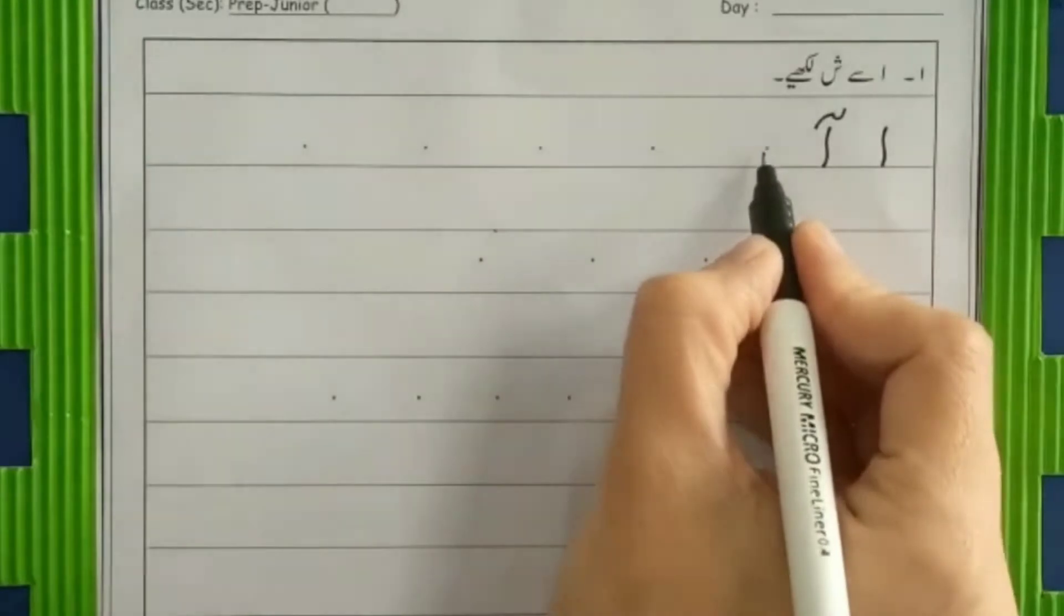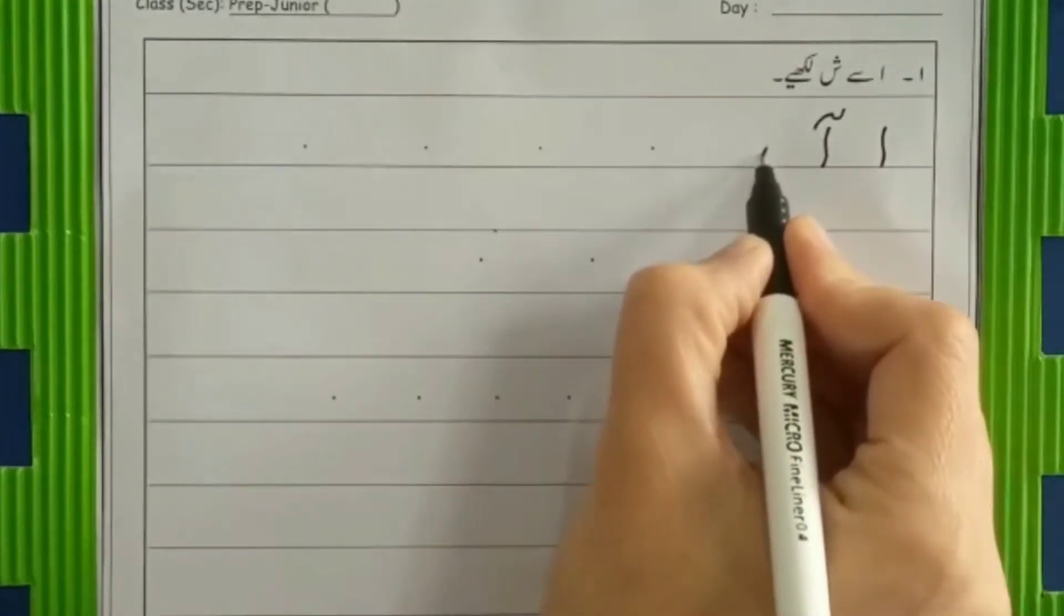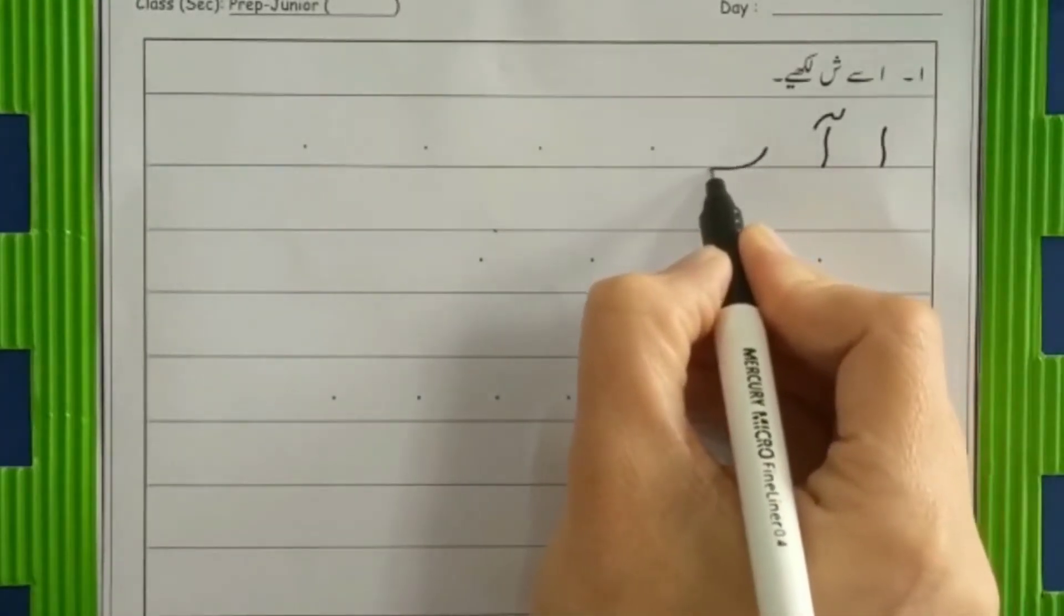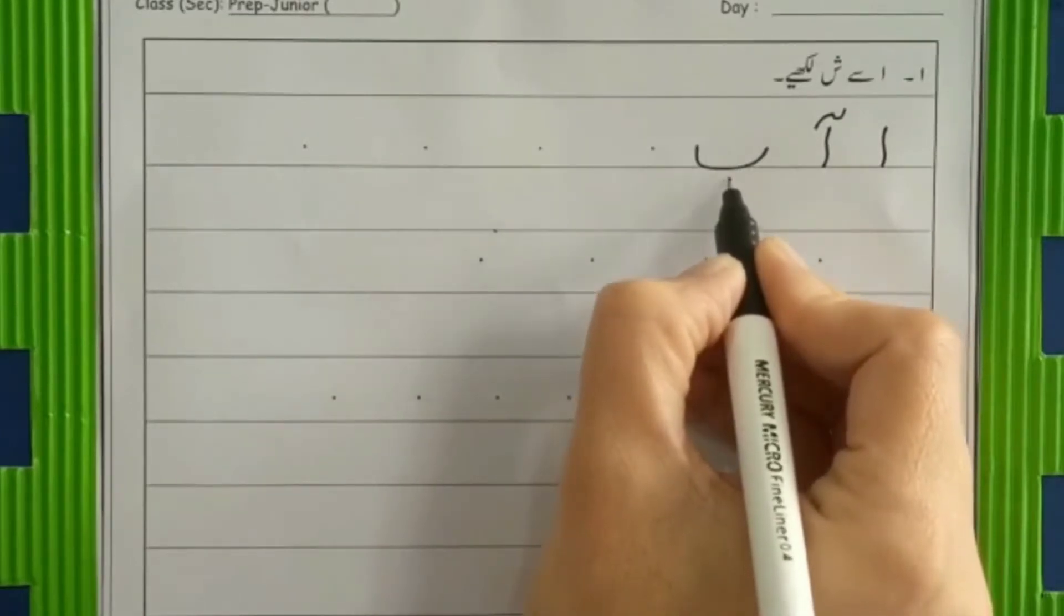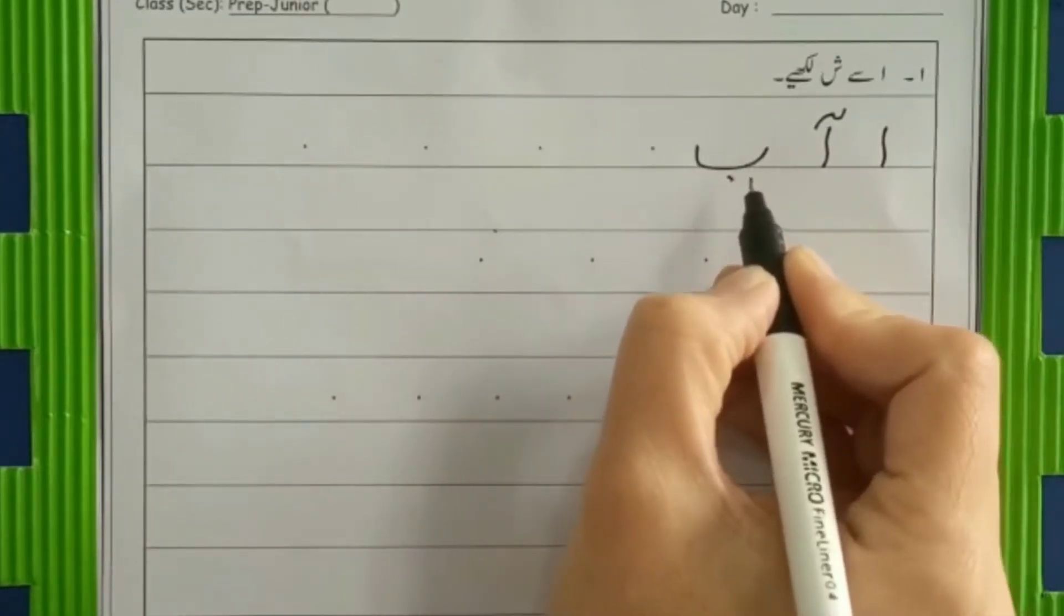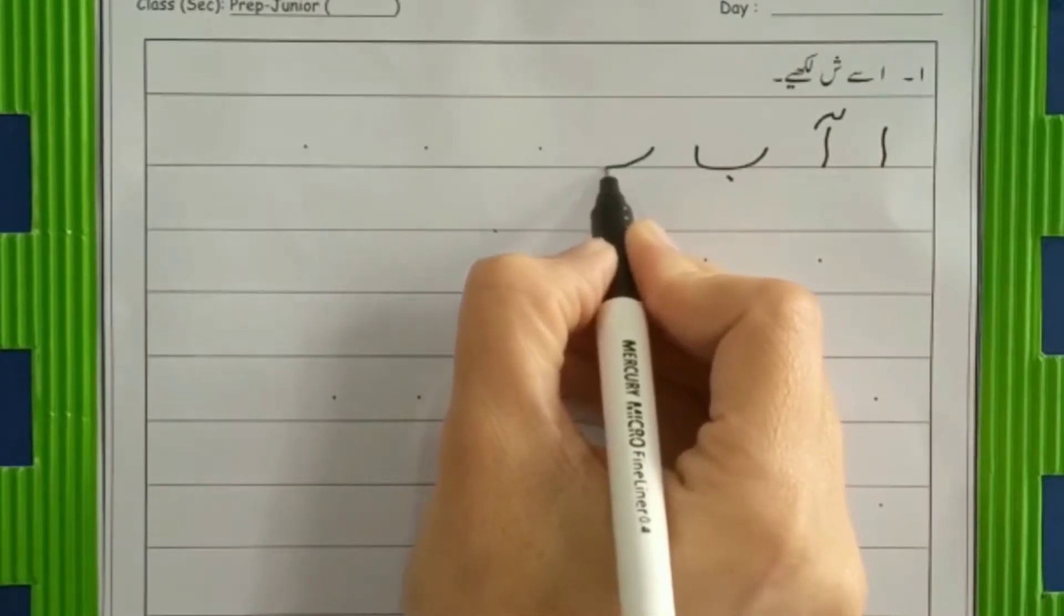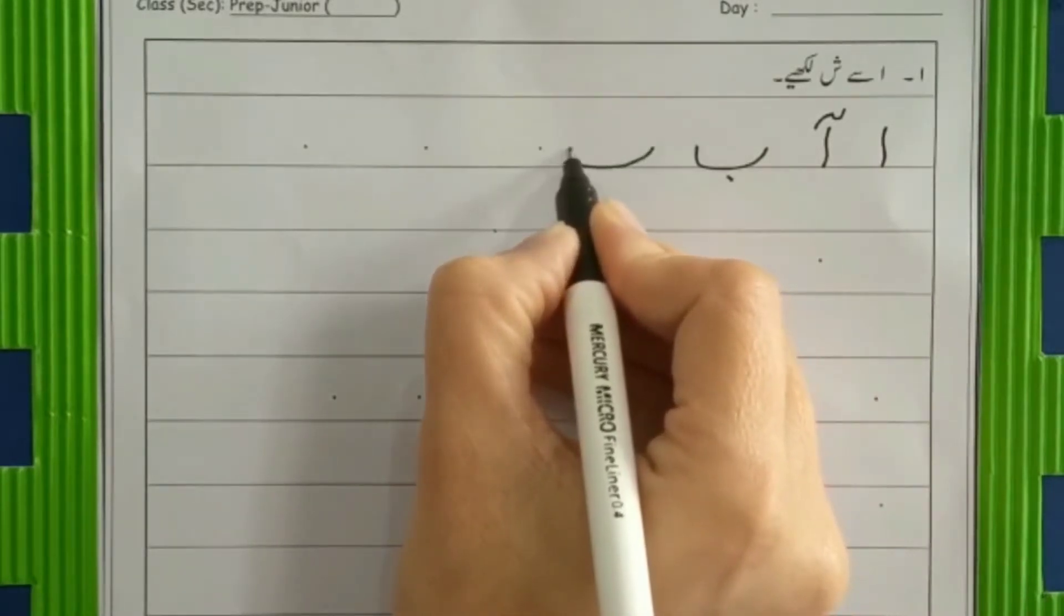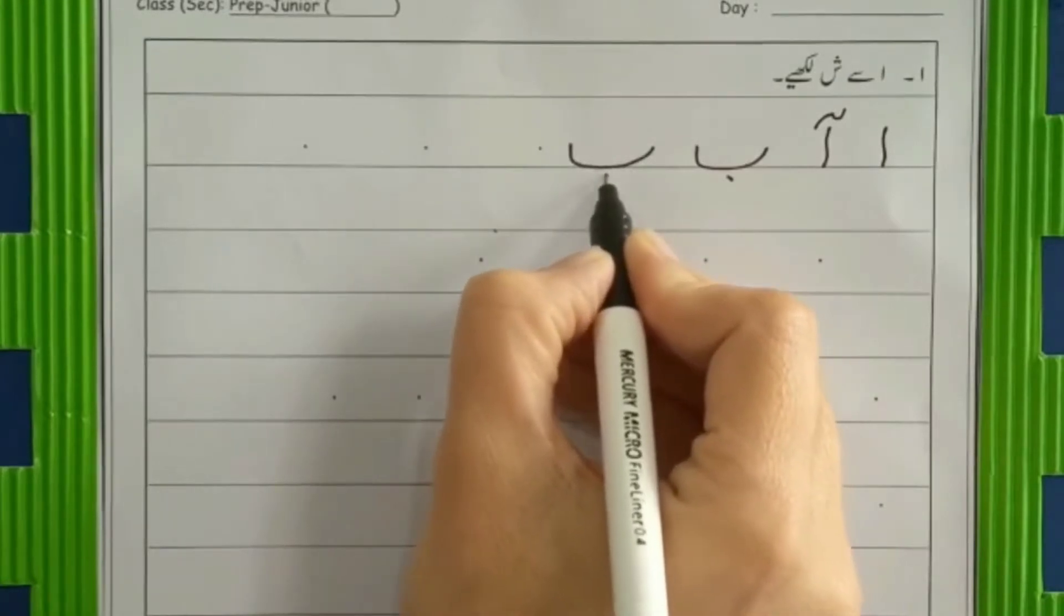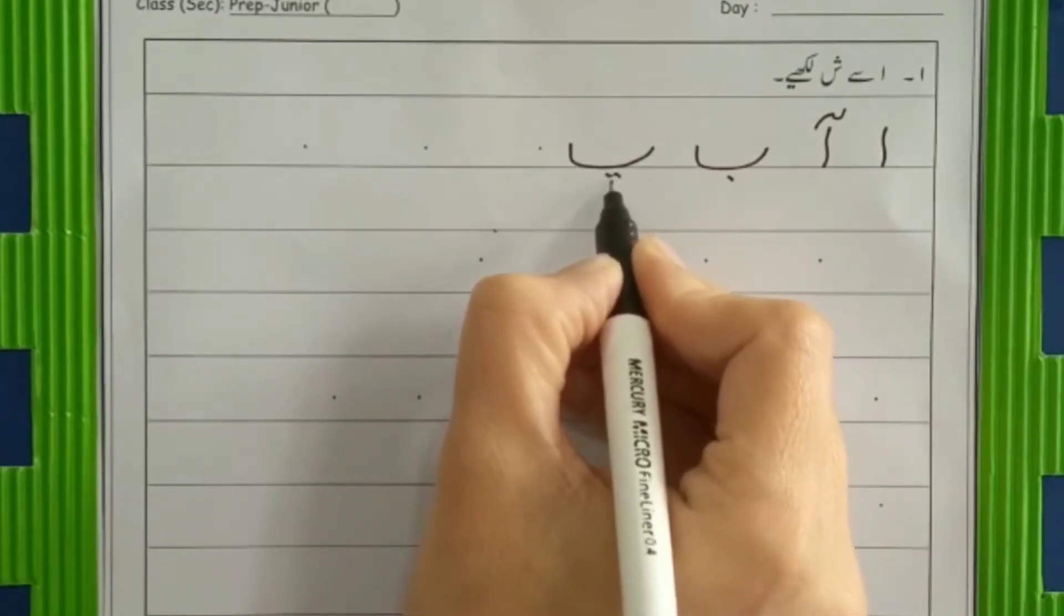Now be family. So first half is be. Come down slant, go on the line, go up straight. One dot down. Be, then pe. Come down slant, go on the line, go up straight. Three dots down.